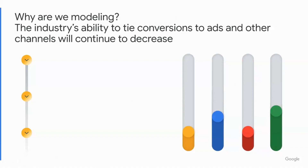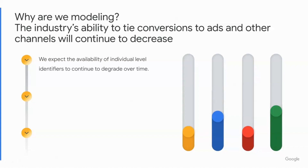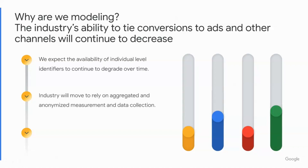So why are we modeling? Conversion modeling is important because the industry's ability to tie conversions to ads and other channels will continue to decrease. We expect the availability of individual-level identifiers to continue to degrade over time. Previously, we lived in a world of fully observable data where we had cookies and device identifiers. With the changing digital marketing landscape and a focus on privacy-safe measurement, data-driven decision-making has become more challenging, but at the same time a lot more critical to preserve. These changes are pushing the industry toward aggregated, anonymized measurement and data collection. As the volume of observable data continues to decrease, the reliance on conversion modeling to provide comprehensive measurement will continue to increase.